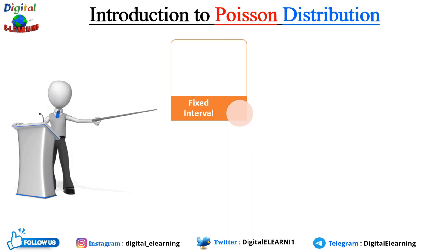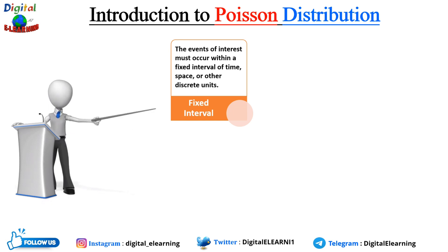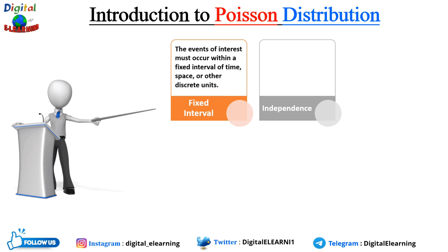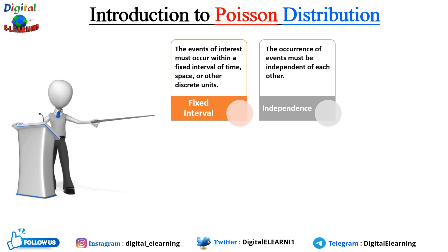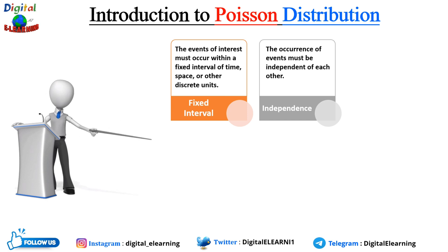First, the fixed interval condition: the event of interest must occur within a fixed interval of time, space, or other discrete units — for example, counting the number of phone calls received in an hour or the number of accidents at a particular intersection in a month. Second, independence: the occurrence of events must be independent of each other, meaning the happening of one event should not influence the likelihood of another event occurring. For example, the arrival of phone calls at a call center should be random and not influenced by the previous call.